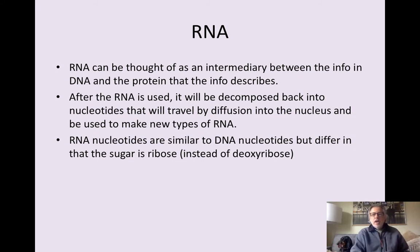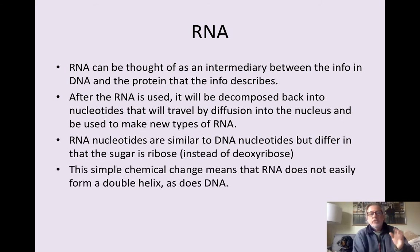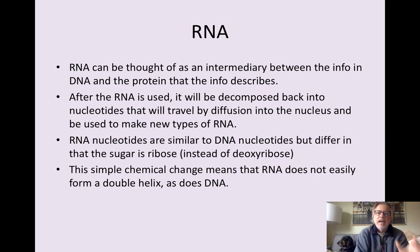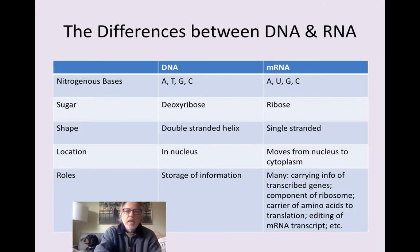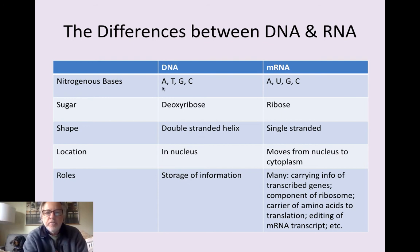RNA nucleotides are very similar to DNA nucleotides, but differ only in that their sugar is ribose instead of deoxyribose, and that's a very small chemical difference. Despite there being a small difference in the sugars, what it means is that RNA does not easily form a double helix structure, whereas DNA does. Here is a table that compares the differences between RNA and DNA. You will notice that DNA uses the bases A, T, G, and C, whereas RNA uses A, U, G, and C. And this should really say RNA, not just mRNA.